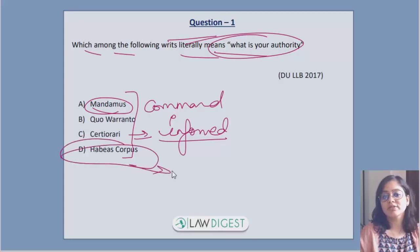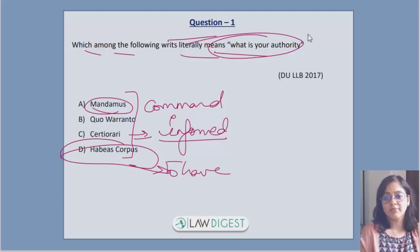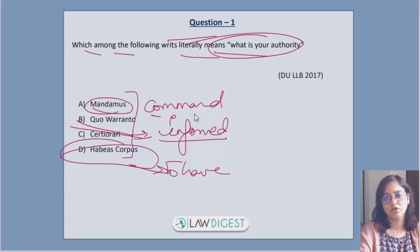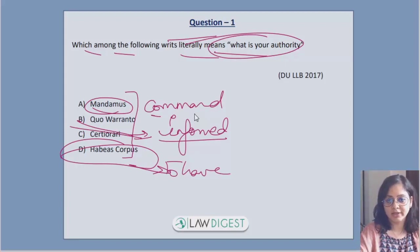Habeas corpus means 'to have the body' or 'to bring the body.' If someone is illegally detained, this writ is issued. Quo warranto means 'what is your authority' — by what authority are you holding a particular office or giving an order? This writ is quo warranto.